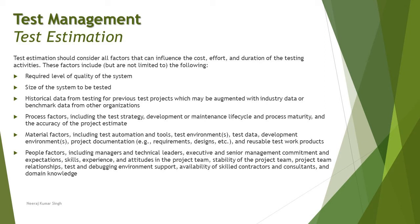The people factor relates to what kind of team and people you have, as they are the effective contributors to your process. For example, a task estimated at 30 hours could take longer if the team lacks domain expertise or product knowledge. This includes managers, technical leaders, executive and senior management commitment and expectations, skills, experience, and attributes of the project team, stability of the project team, team relationships, test and debugging environment support, availability of skilled contractors and consultants, and domain knowledge.